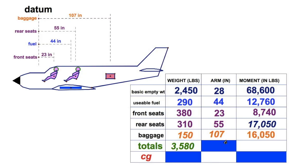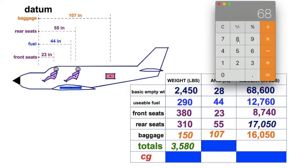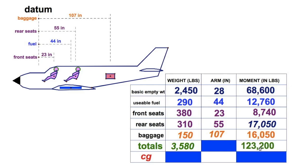Now again, we cannot add up the arms. You got to add up the moments and then divide. So let's do that. 68,600, and then I'm going to add 12,760, and I'm going to add 8,740, I'm going to add 17,050, then I'm going to add 16,050, for a grand total of 123,200 on the inch pounds. So again, that is the sum. All the moments may be added. The weights may be added.